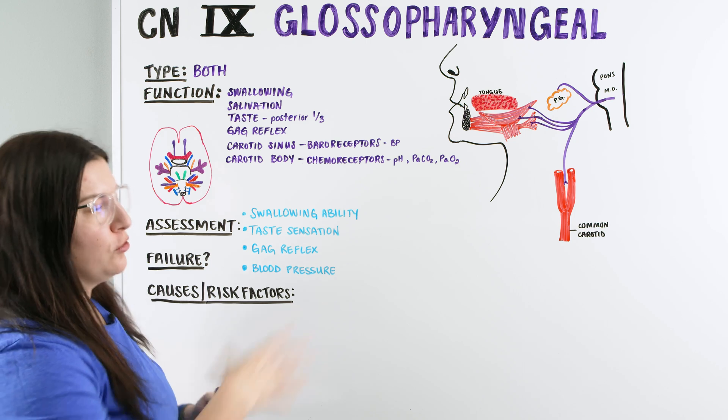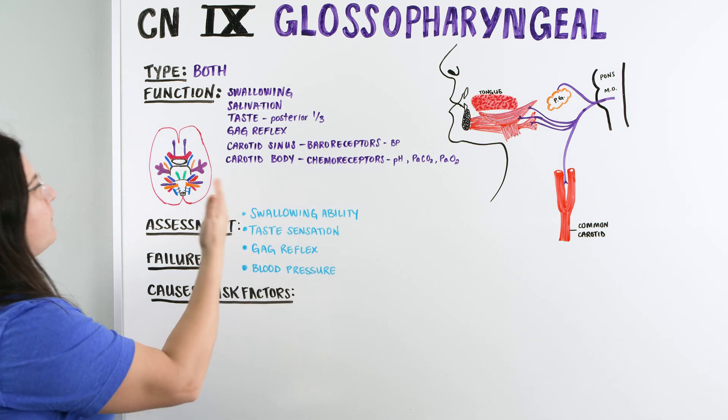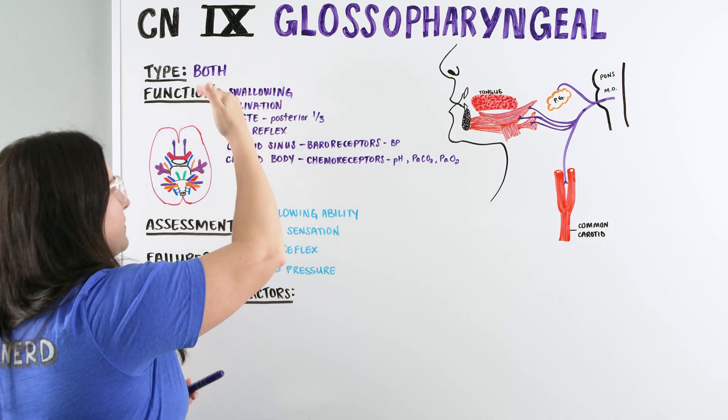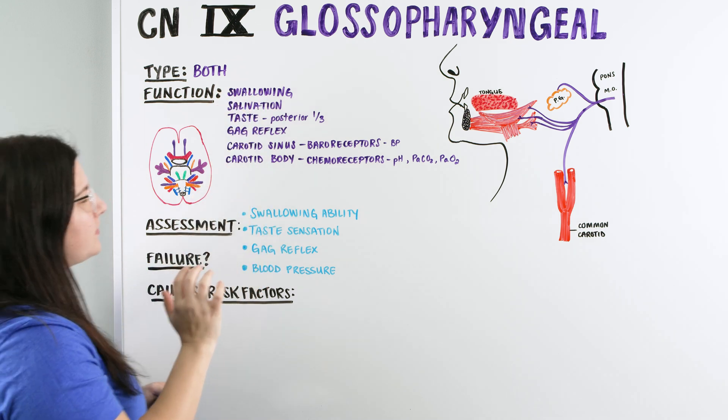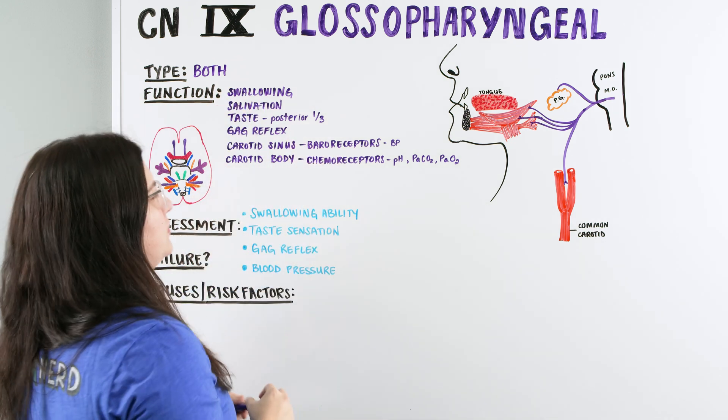So when we look at the functions here, I just denoted that the baroreceptors are for our blood pressure and the chemoreceptors are for our pH or our O2 and our CO2. Just a refresher so you don't have to look for that later. But when we see our functions here, we have swallowing, salivation, taste, gag reflex, and then we have this area that has to do with our blood.